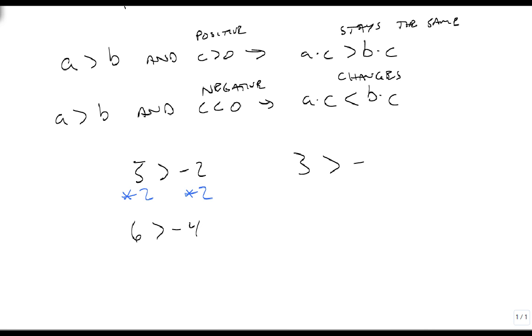But if 3 is greater than minus 2, and I multiply both sides by a negative 2, this gives me a negative 6 and a positive 4, and positive 4 is bigger than negative 6, so it's switched directions.